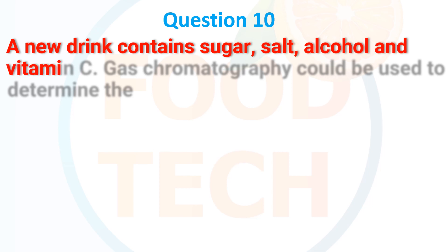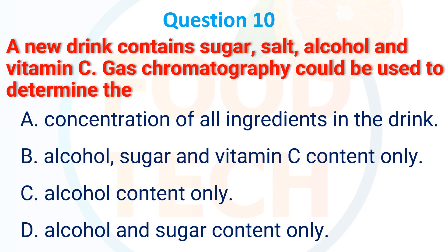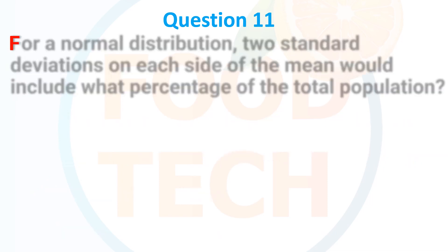A new drink contains sugar, alcohol, and vitamin C. Gas chromatography will be used to determine the: A. Concentration of all ingredients, B. Alcohol, sugar, and vitamin C content only, C. Alcohol content only, D. Alcohol and sugar content only. The correct answer is C: alcohol content only.